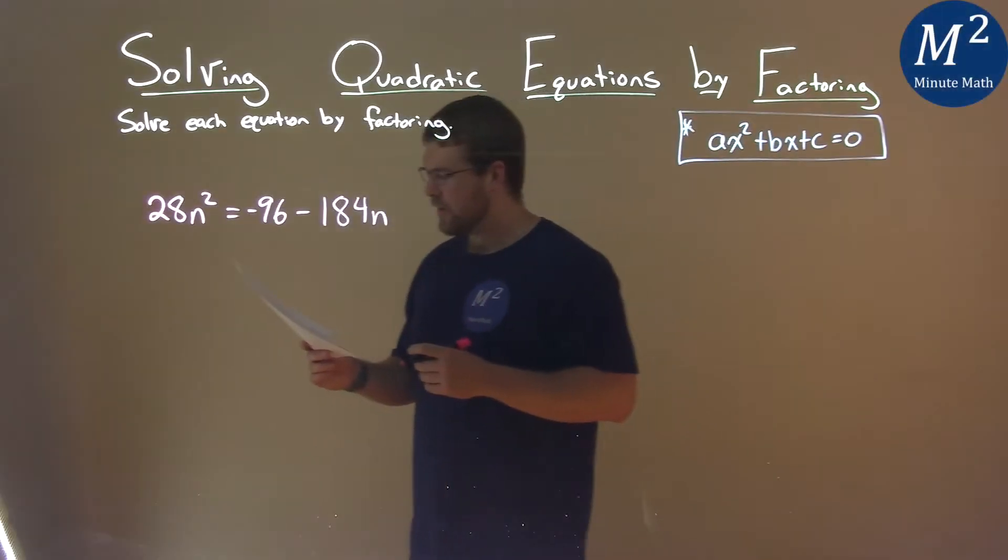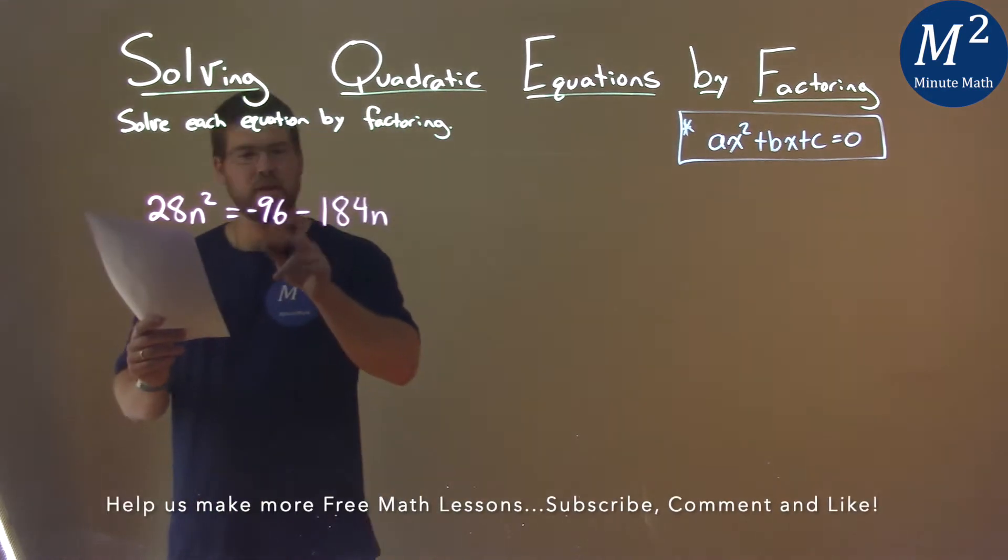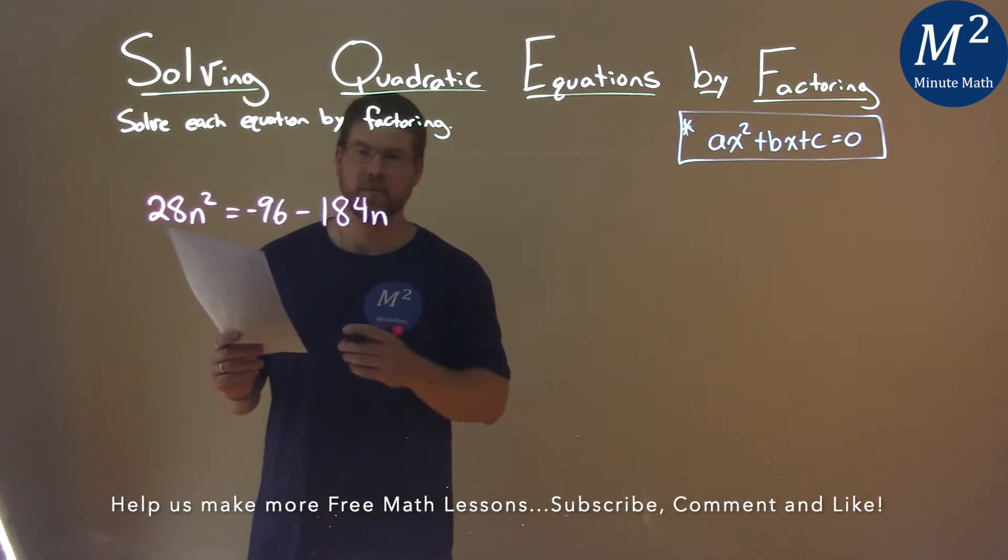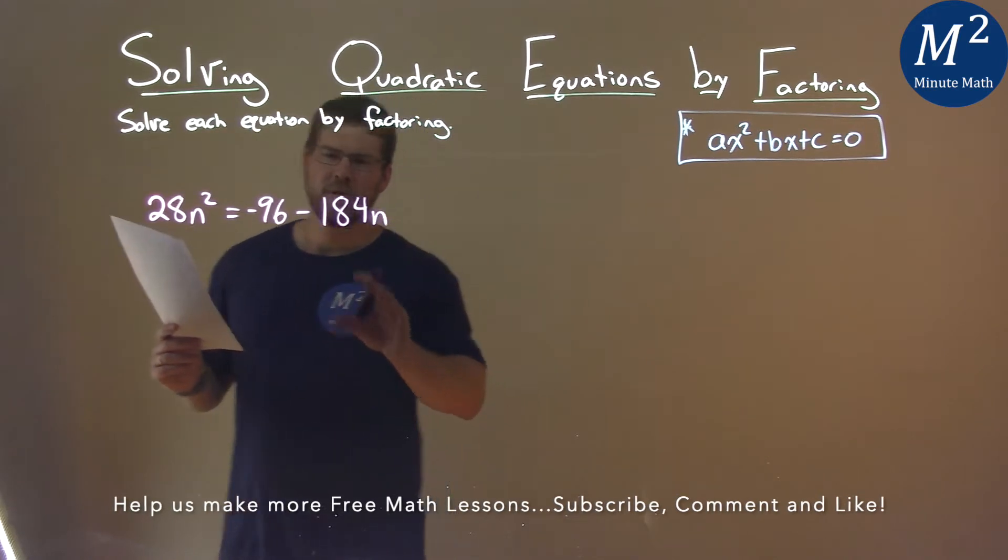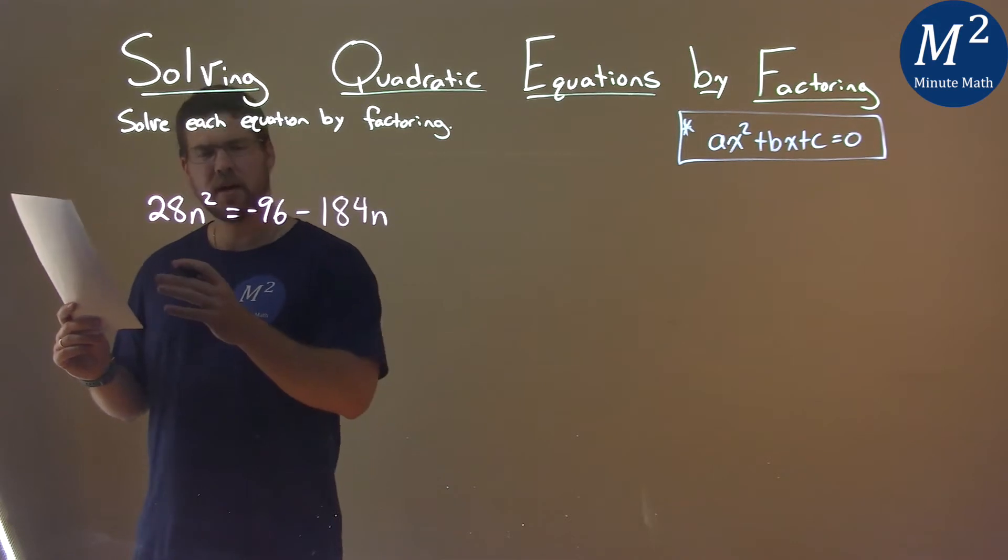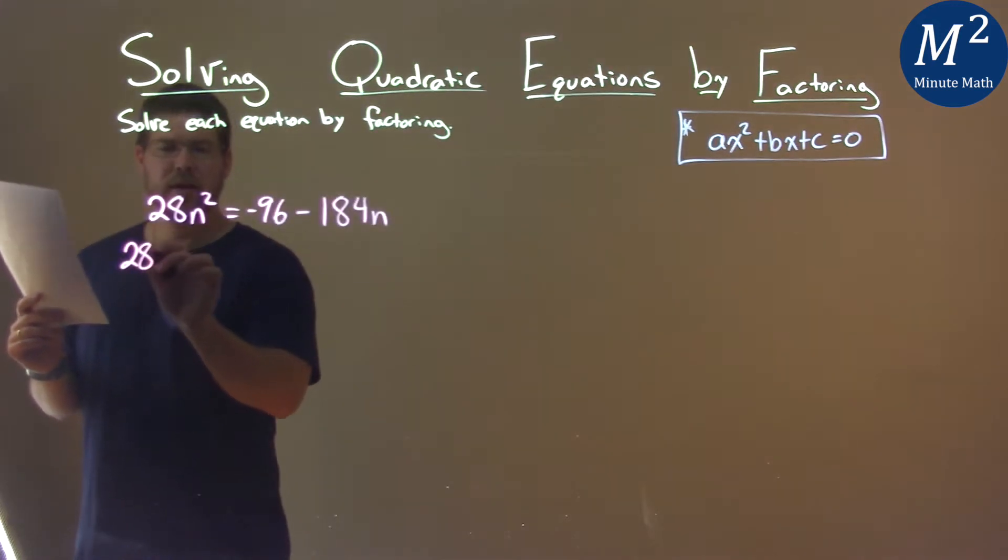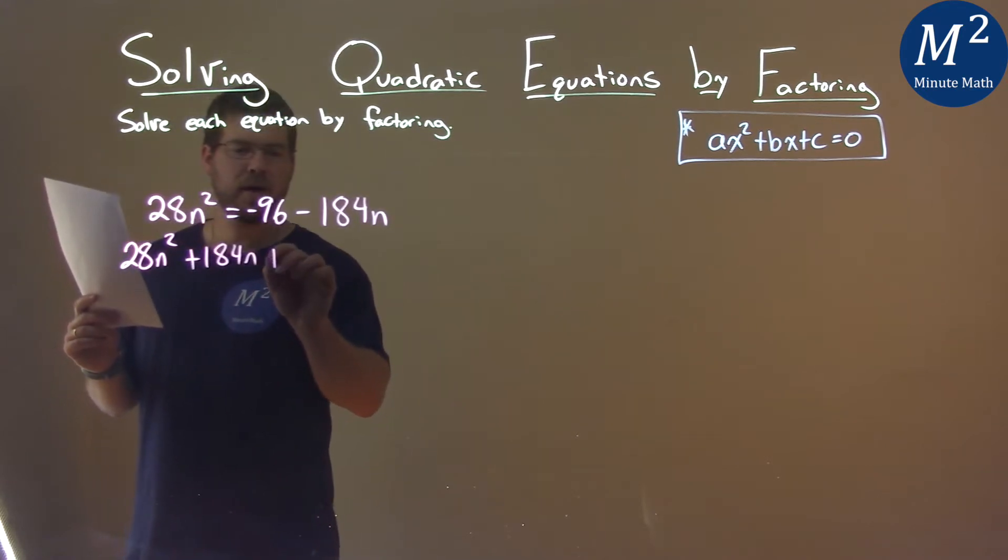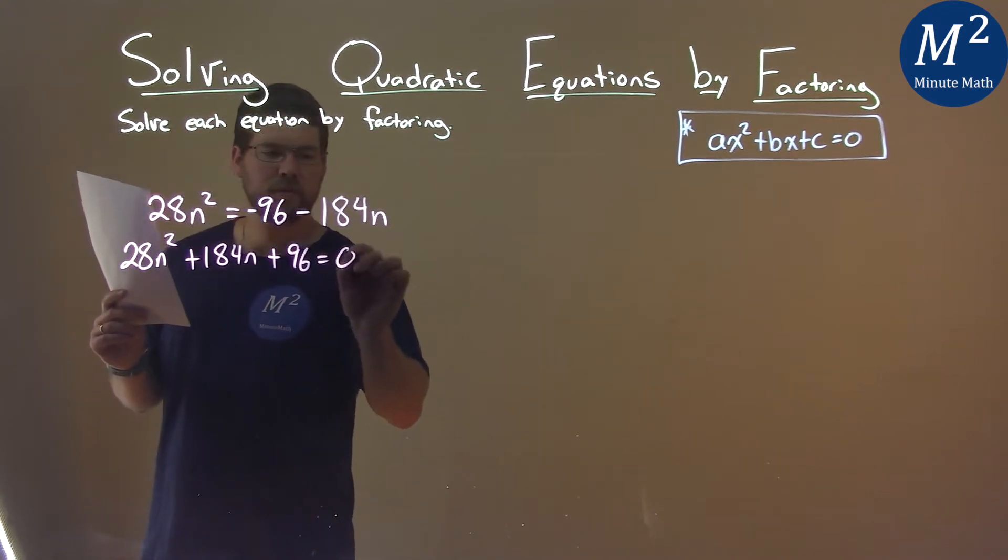We're given this problem right here, 28n squared equals negative 96 minus 184n, and we need to solve this by factoring. First thing is, I'm going to add my right-hand side to the left-hand side, just bring it all over. Doing that, I have 28n squared, then a positive 184n, then a positive 96 equals zero.